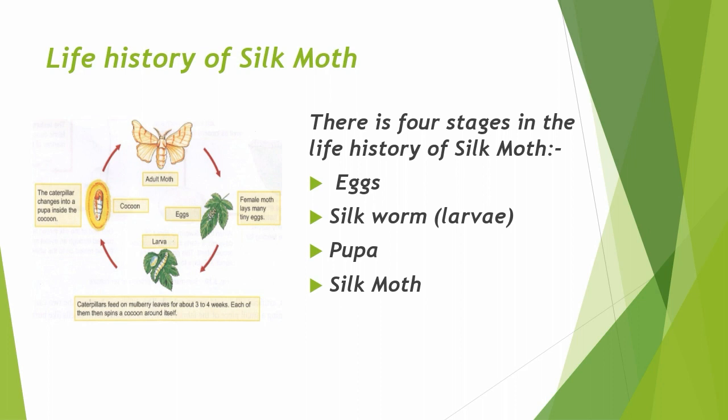The four stages are: first is Egg, second is Silk Worm, third is Pupa, and fourth is Silk Moth. We are going to talk about these four stages in detail in the next slides.